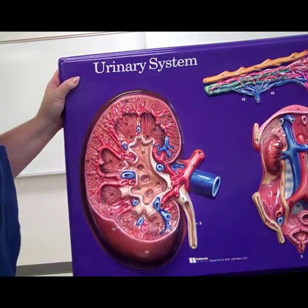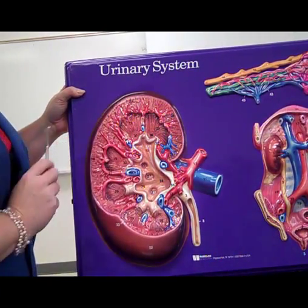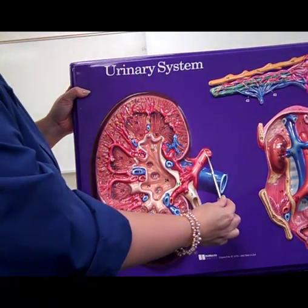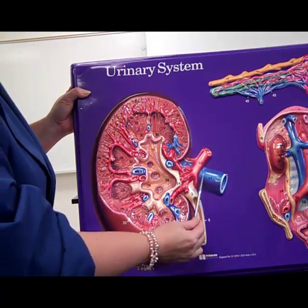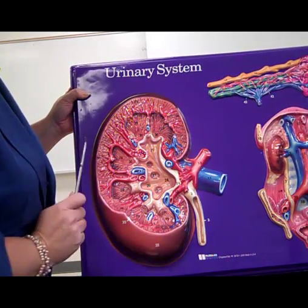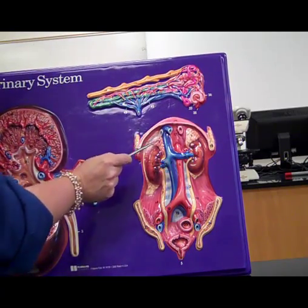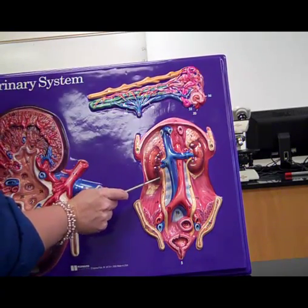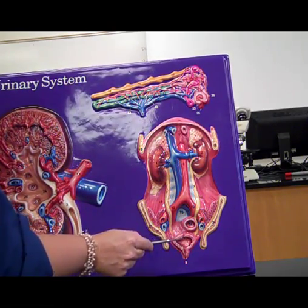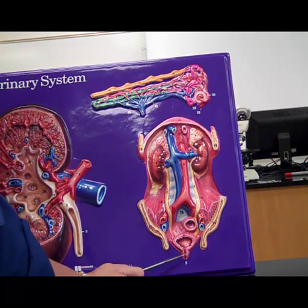We can look at the secondary model of the urinary system showing our big, gorgeous kidney. Once again, the outer structure is the cortex; the inner structures are the renal medulla. There's our renal artery coming in, our renal vein going out, and the ureter draining the kidney. It shows each individual kidney with adrenal glands on top, each ureter nice and yellow, both draining into the urinary bladder, and from the bladder to the outside world is the single urethra.